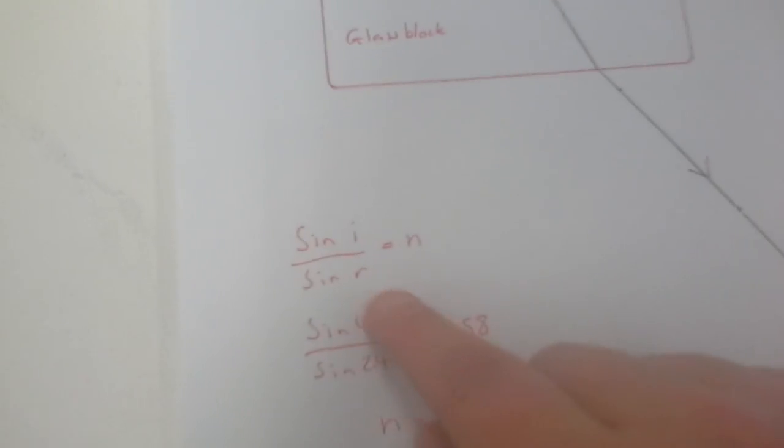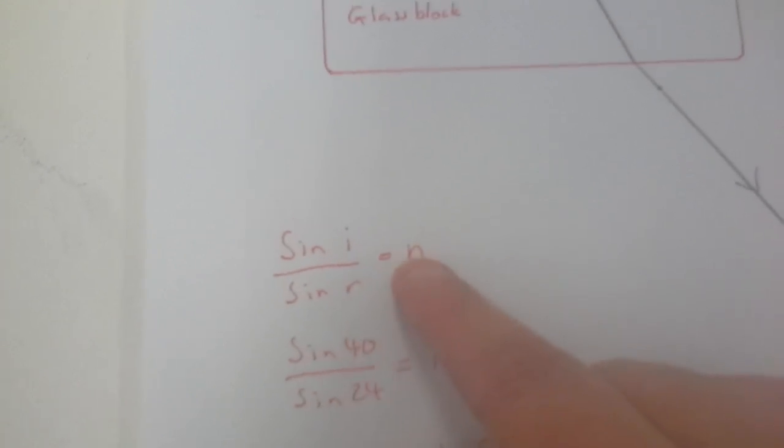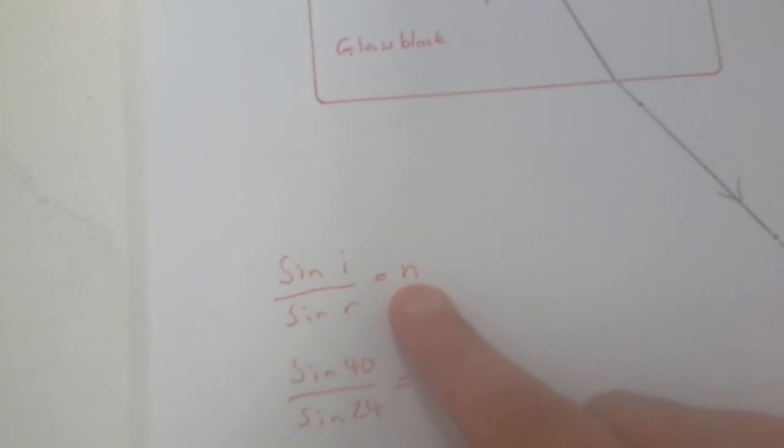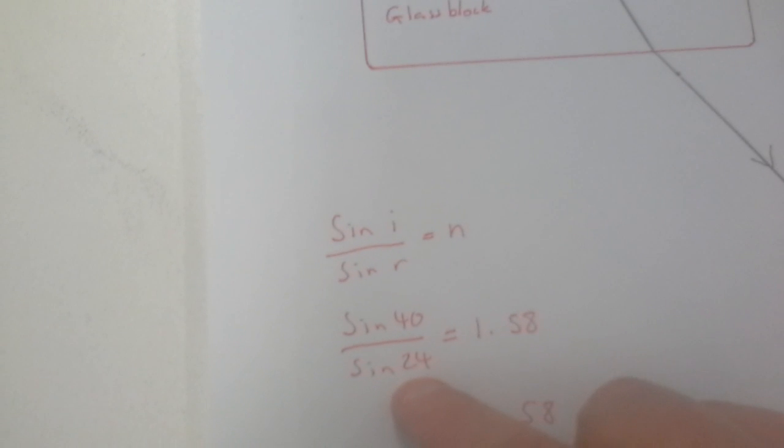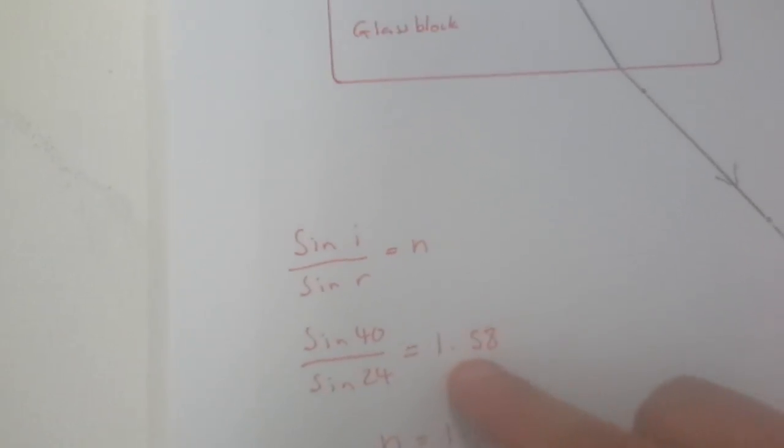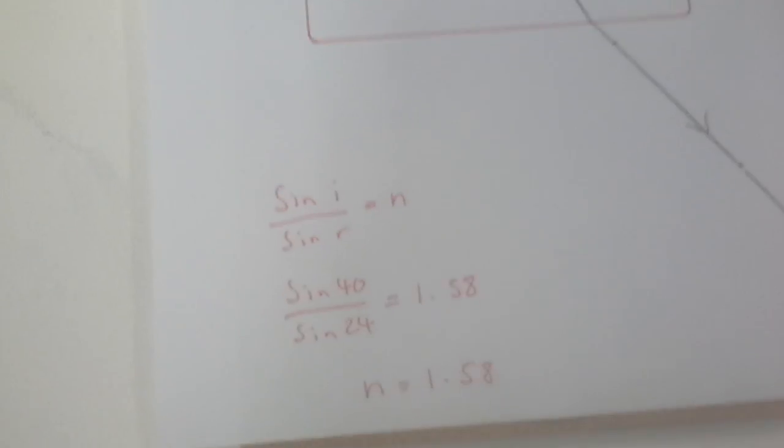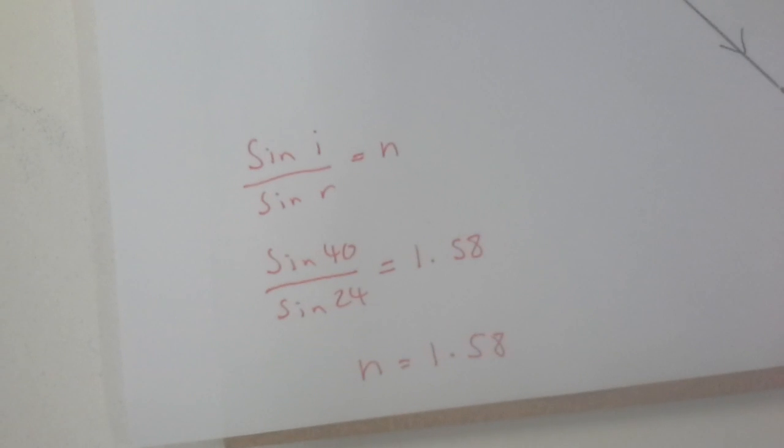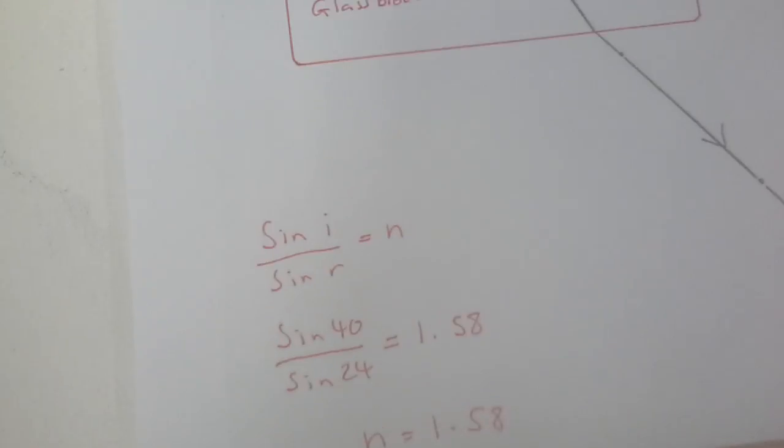So the next thing you're going to do is sine i over sine r, which gives us the refractive index of the glass. Sine 40 over sine 24 equals 1.58, and that is the refractive index of the glass.